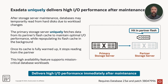Exadata uniquely delivers high IO performance after maintenance. After storage server maintenance, databases may temporarily read from hard disk due to workload changes. Starting with Exadata System Software 25.2, the primary storage server uniquely fetches data from its partner's flash cache to maintain optimal IO performance while repopulating its own flash cache in the background. Once its cache is fully warmed up, it stops reading from the partner. This high availability feature supports mission-critical database workloads and delivers high IO performance immediately after storage server maintenance.